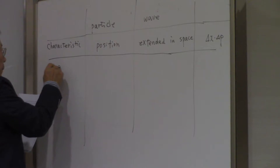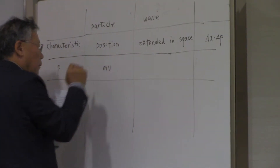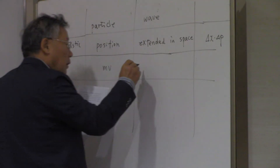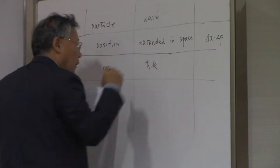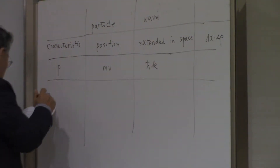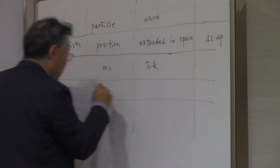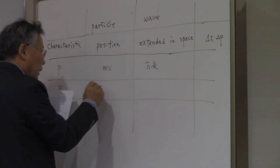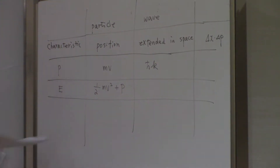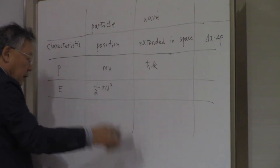What about the momentum? In the particle picture, momentum is mv. In the wave picture, it is ħk. And the energy: the kinetic energy is ½mv² plus potential energy. Let's just think about the kinetic energy.